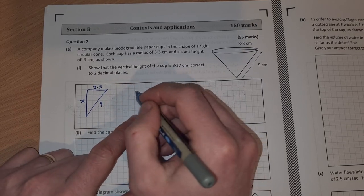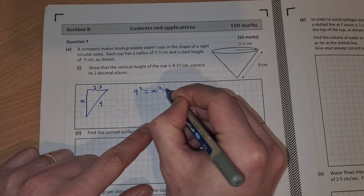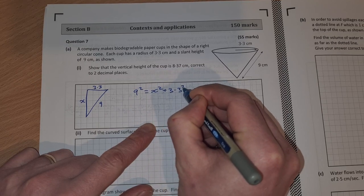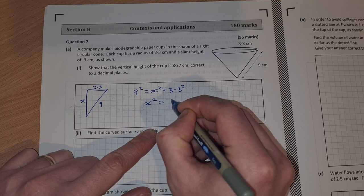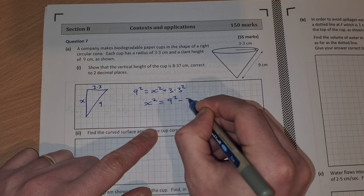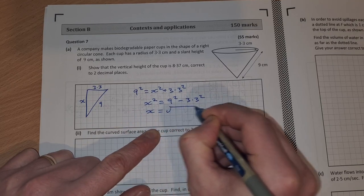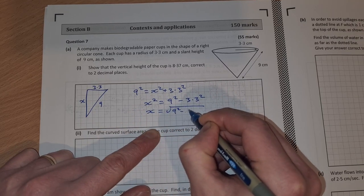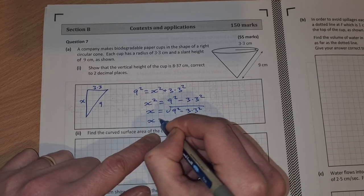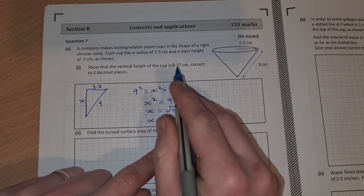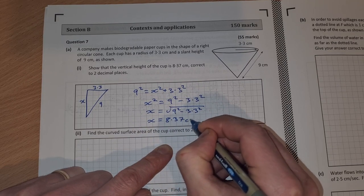Just use Pythagoras for this. We have 9 squared equals x squared plus 3.3 squared. So x squared equals 9 squared minus 3.3 squared. So x equals the square root of that, the square root of 9 squared minus 3.3 squared. Pop that into your calculator and you should get the answer 8.37 centimeters.